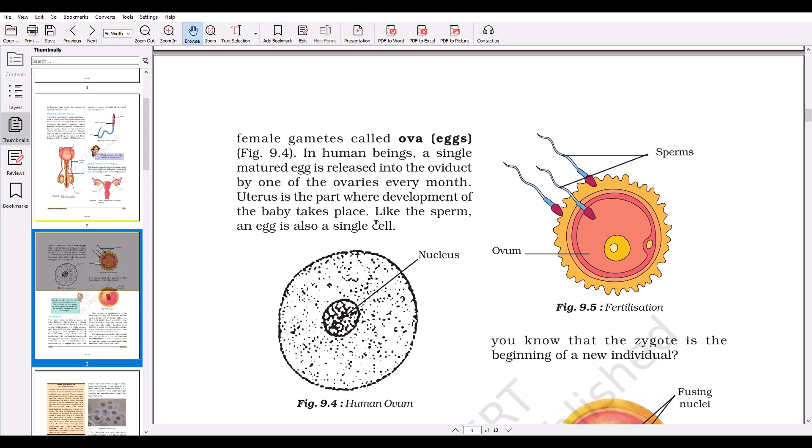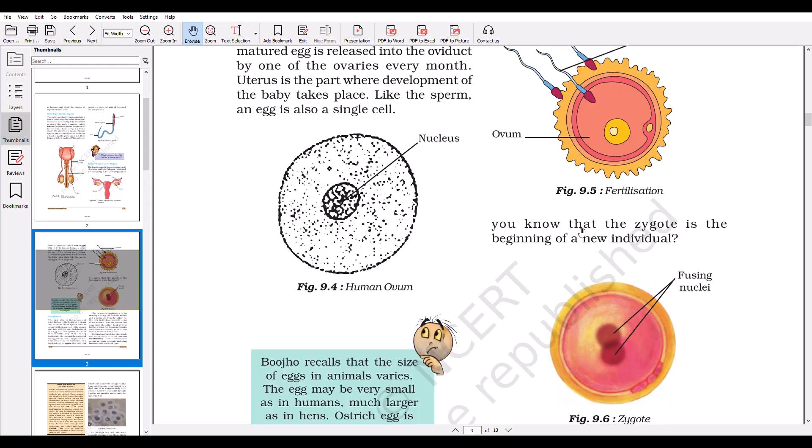In human beings, a single mature egg is released into the oviduct by one of the ovaries every month. The uterus is the part where development of the baby takes place. Like the sperm, the egg is also a single cell. In figure 9.5, the fertilization process has been shown where sperms are trying to enter into the ovum. In figure 9.4, the structure of the human ovum has been shown, and a nucleus is seen clearly.